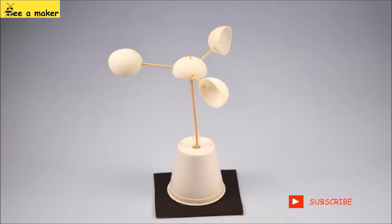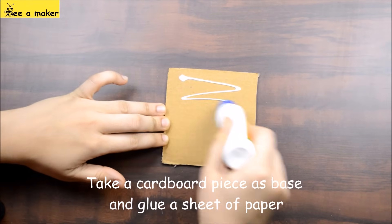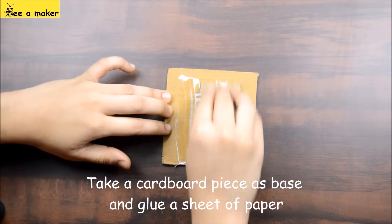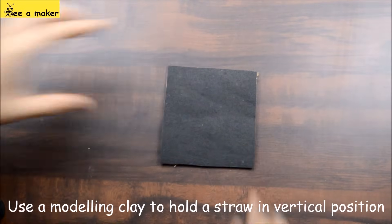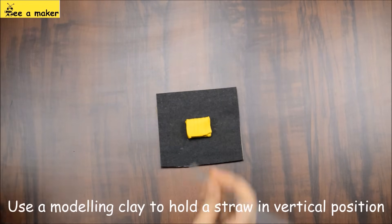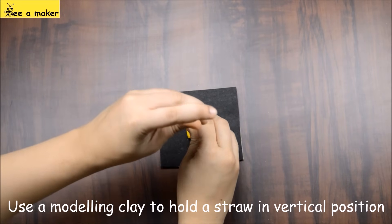Now let's see how to make an anemometer. Take a cardboard piece as base and glue a sheet of paper. Use modeling clay to hold a straw in vertical position.